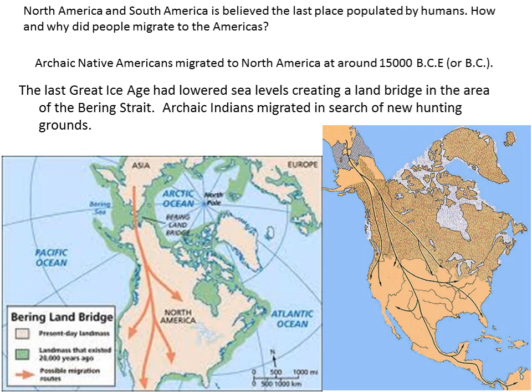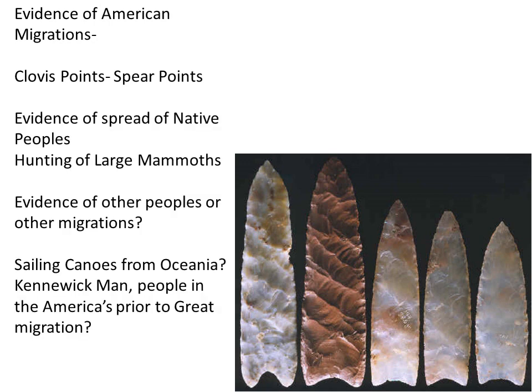We've often called this land bridge Beringia, which is the predominant theory for how Native Americans populated North America about 15,000 years ago, a long time before Columbus arrived in the Caribbean. Evidence of these migrations comes from archaeology, particularly the location of things called Clovis points, which are the spear points pictured in this image. These spear points provide evidence of Native Americans hunting large mammoths. There are also huge questions about whether some Native Americans populated South America by using outrigger canoes.